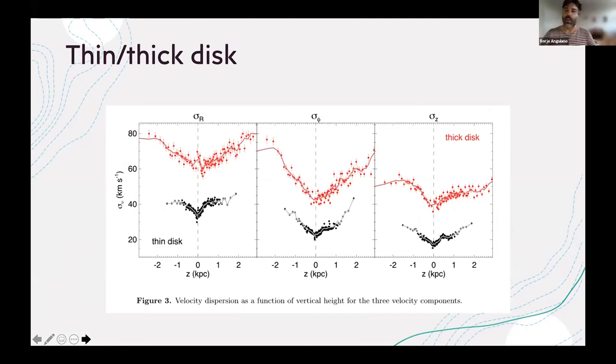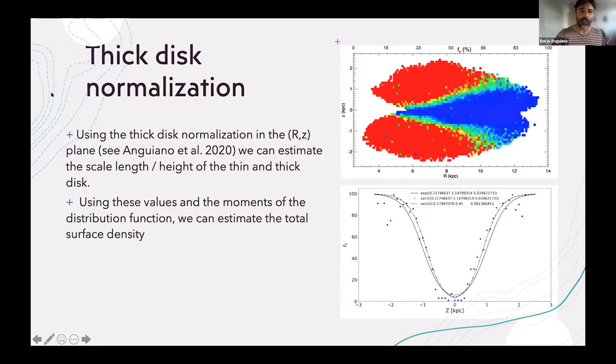If we do something similar for the velocity dispersion, you start to see that when you use Gaia you are assuming these populations. Thanks to the chemistry of all these abundances we can do it. We can play this game and do this separation.